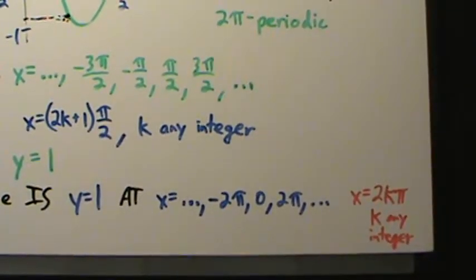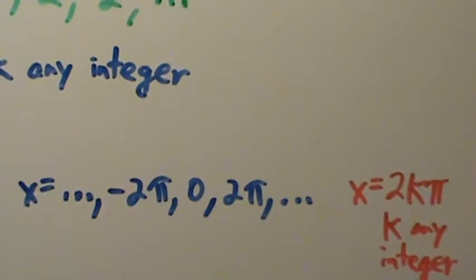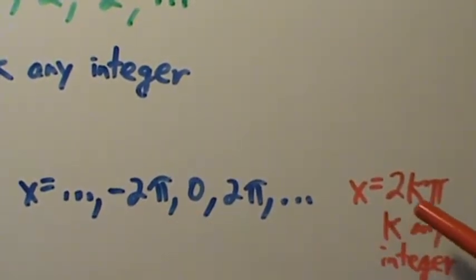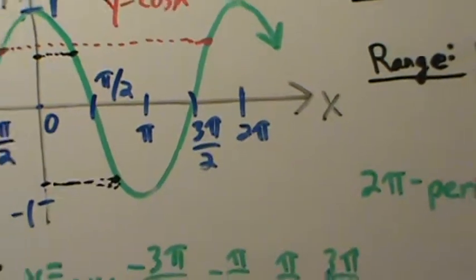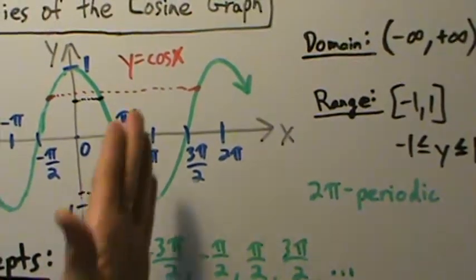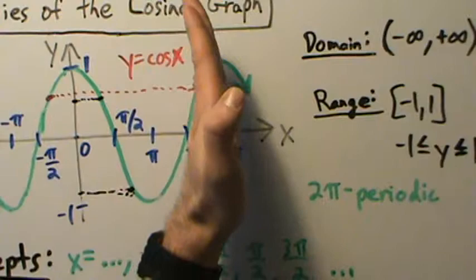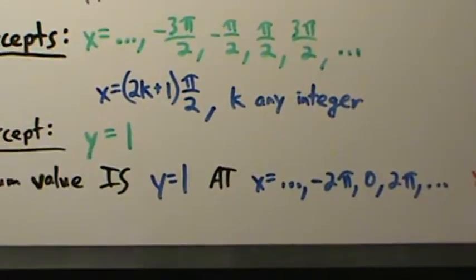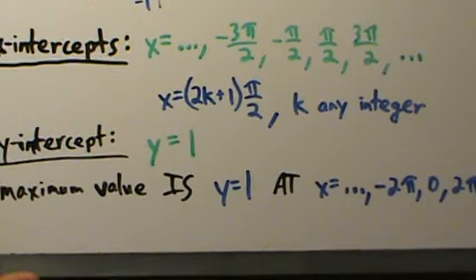We know this pattern continues from the 2π periodic property: if y = 1 at x = 2π, then going 2π units to the right puts us at 4π with the same y-coordinate. So the maximum value is y = 1, occurring at x = 2kπ for any integer k — that is, at all even integer multiples of π.